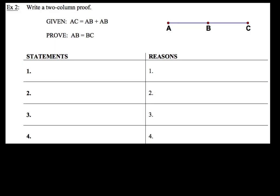So here in example two we're going to write our two column proof given that AC is equal to AB plus AB and we'll have to prove that AB equals BC.